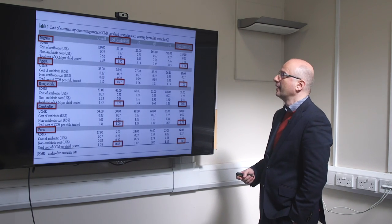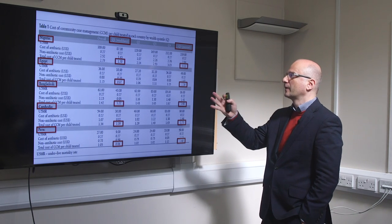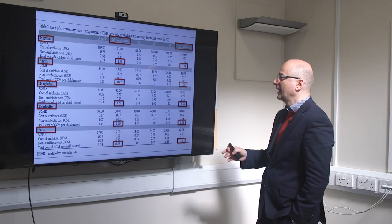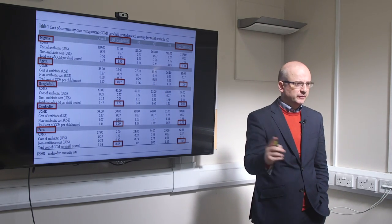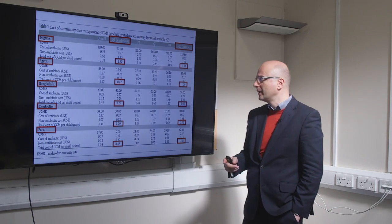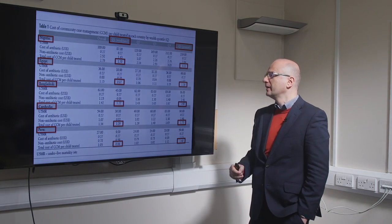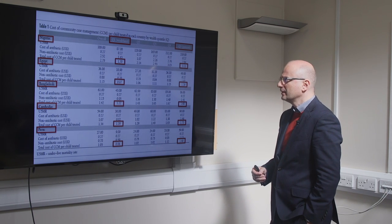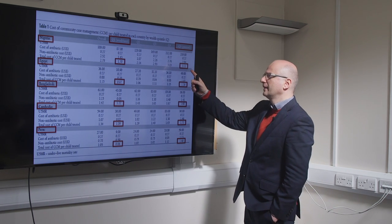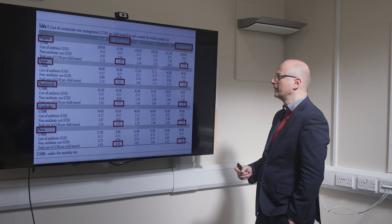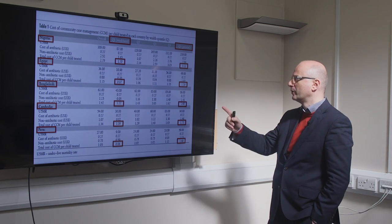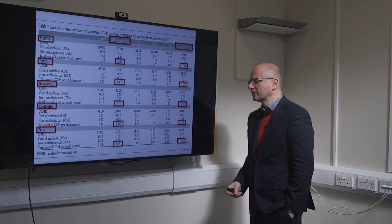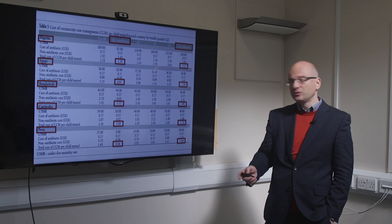We then looked at the cost of community case management per child treated in each country by wealth quintile. In Nigeria, it was $170 per child treated in the wealthiest quintile but $311 in the poorest — about a twofold difference. Egypt showed a smaller difference. Bangladesh also showed about a two-to-three-fold cost increase from wealthiest to poorest. So it clearly costs more in each country to treat poor children.